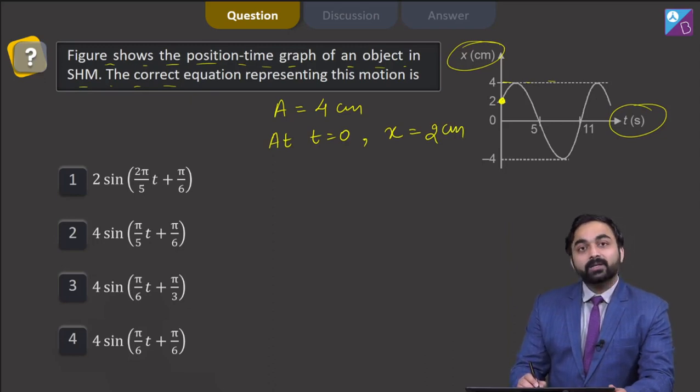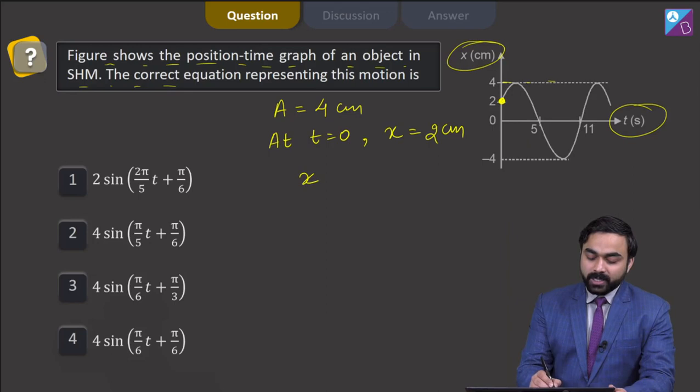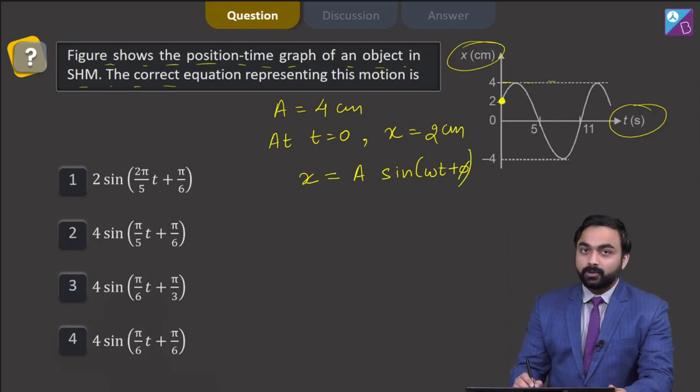Now, we need to find the equation of SHM and we know the standard form of equation of SHM is given by x is equal to A sin omega t plus phi.